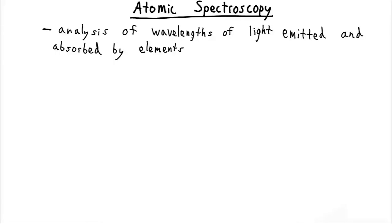This idea of atomic spectroscopy, where we can analyze different elements based on the wavelengths of the lights which they emit and absorb. This is the only way at this point that we can figure out the electronic structure of these atoms.